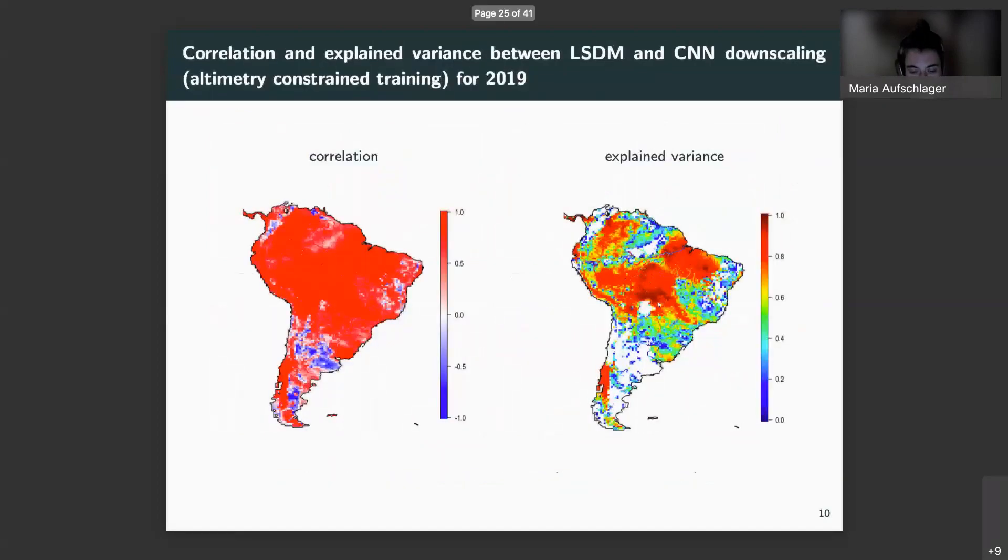For additional comparison, I calculated the annual correlation and the explained variance between the LSDM and the constraint neural network downscaling. For the correlation, you can see majorly high values, especially in the tropical regions around the Amazon region values of more than 0.85 are found. This is probably because of large groundwater basins and rainfalls, which cause strong signals, and there can be more easily retrieved. In more temperate climate in the south and in arid regions, we can find lower and even negative correlation values. A similar pattern we can see for the explained variance. I do have more than 0.9 explained variance for the tropical regions and in the south arid regions up to zero.